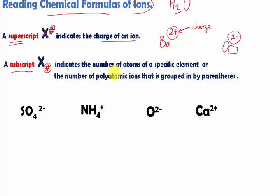And this number indicates the number of atoms of a specific element. What does that mean? If I have O2, remember O2? This is oxygen gas. It's not an ion. But that two right there, that tells you that there are two oxygen atoms in oxygen gas. Or we can go back to H2O. See that two right there? That tells you there are two hydrogen atoms.